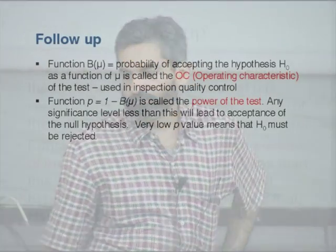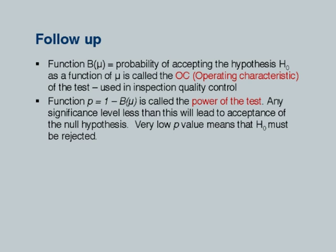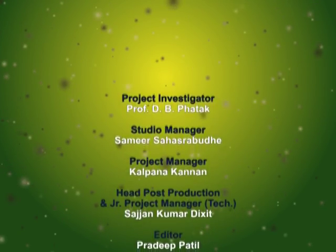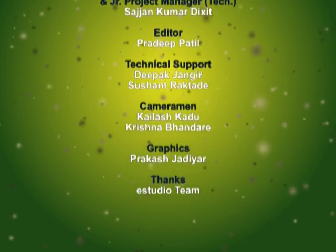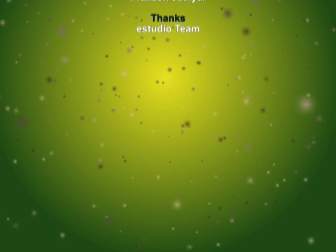In quality control literature, the term OC — operating characteristic — is used. It is a curve where P, the probability of success, is on the x-axis and the probability of accepting the hypothesis is on the y-axis. One minus that is the power of the test. As P increases, the probability of accepting the null hypothesis decreases — so this function is decreasing in this case.